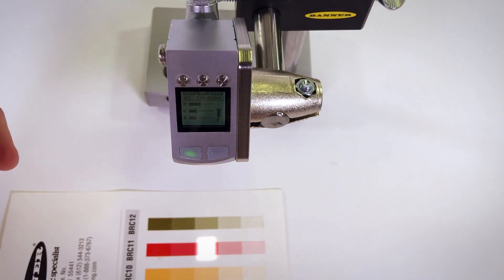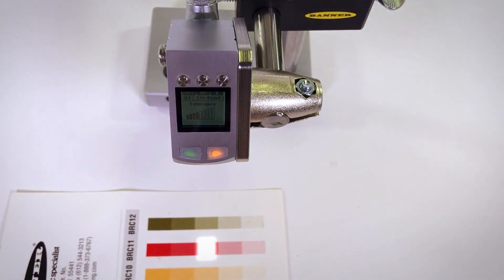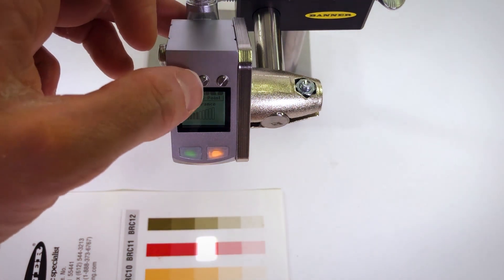I will be using a color reference card for demonstrating this sensor mode and we will teach the middle red target by pressing the teach button. The sensor then allows for adjustment of tolerance and I will keep mine as the default tolerance level so I'll press set and then finish.